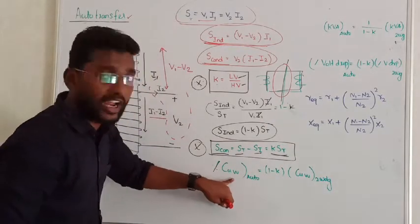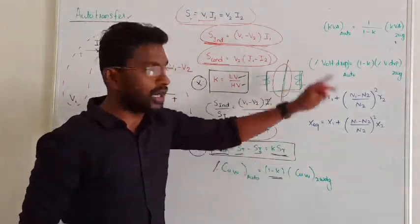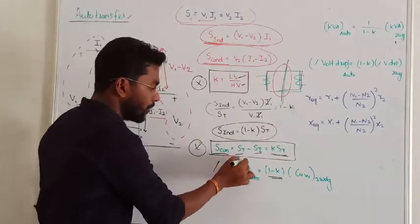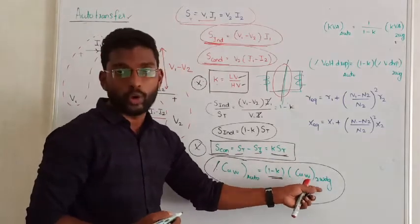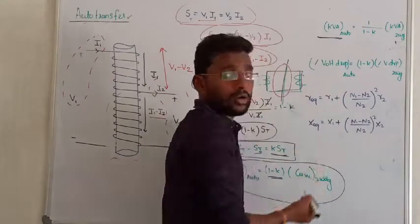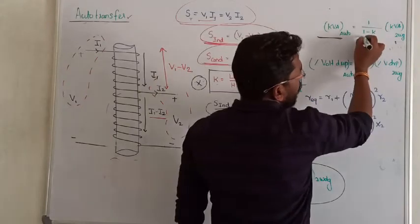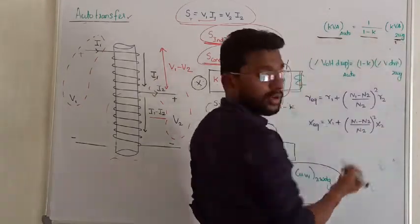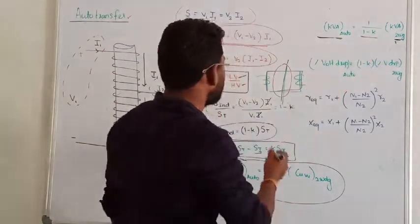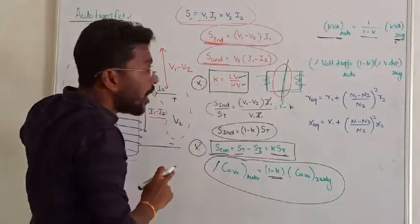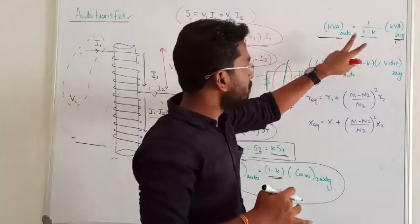Similarly, the copper weight of the autotransformer equals (1 minus k) times the copper weight of the two-winding transformer. The kVA rating of the autotransformer equals (1 divided by 1 minus k) times the kVA rating of the two-winding transformer. Once you find the value of k — the ratio of low voltage to high voltage — you can directly calculate these quantities. These relations are very important from an exam point of view.